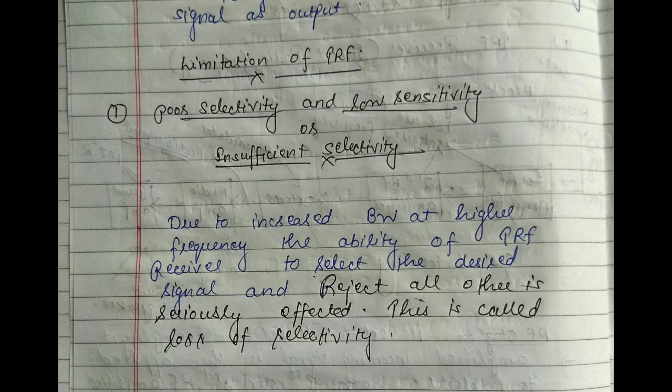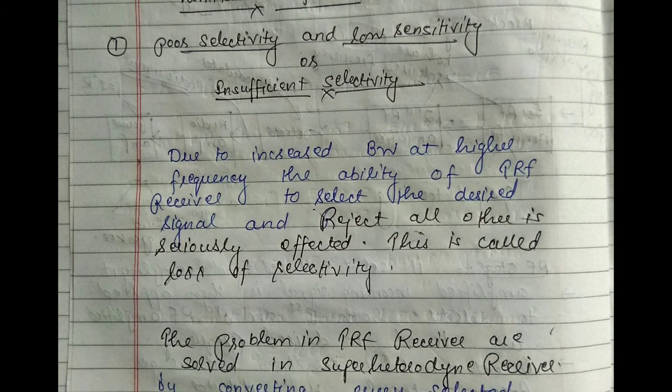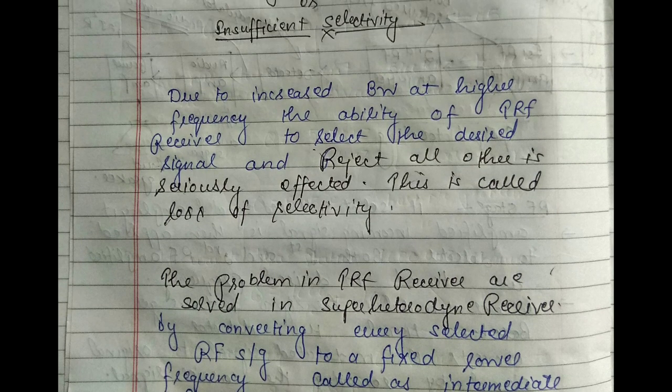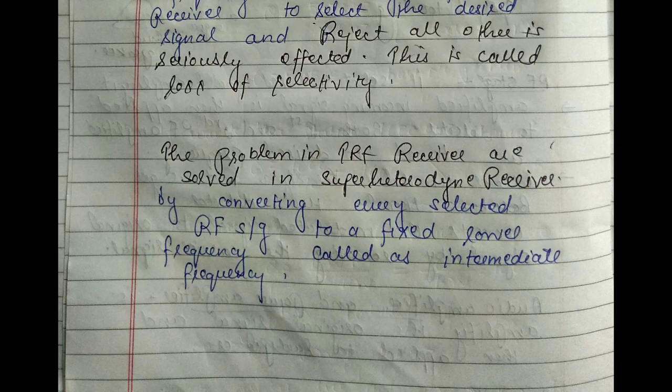The first limitation is poor selectivity and low sensitivity. This problem of the TRF receiver will be understood when we study the superheterodyne receiver, where an intermediate frequency stage is used. The selectivity problem of the TRF receiver is solved in the superheterodyne receiver.